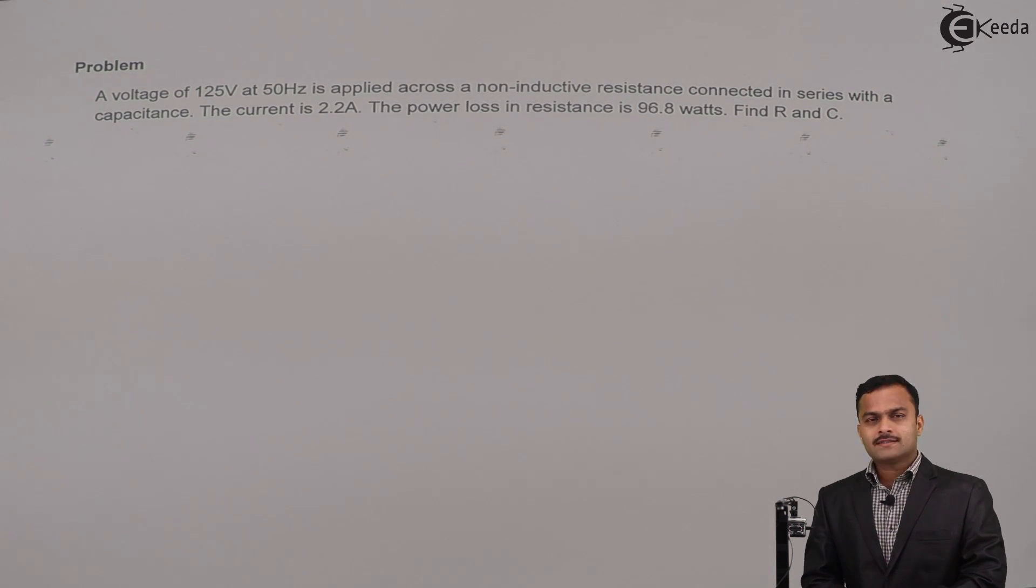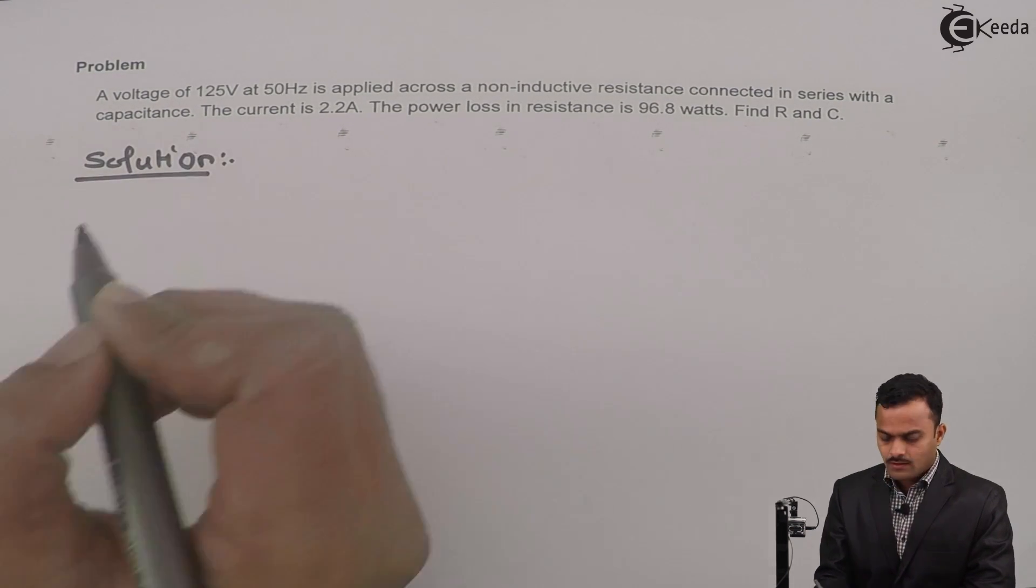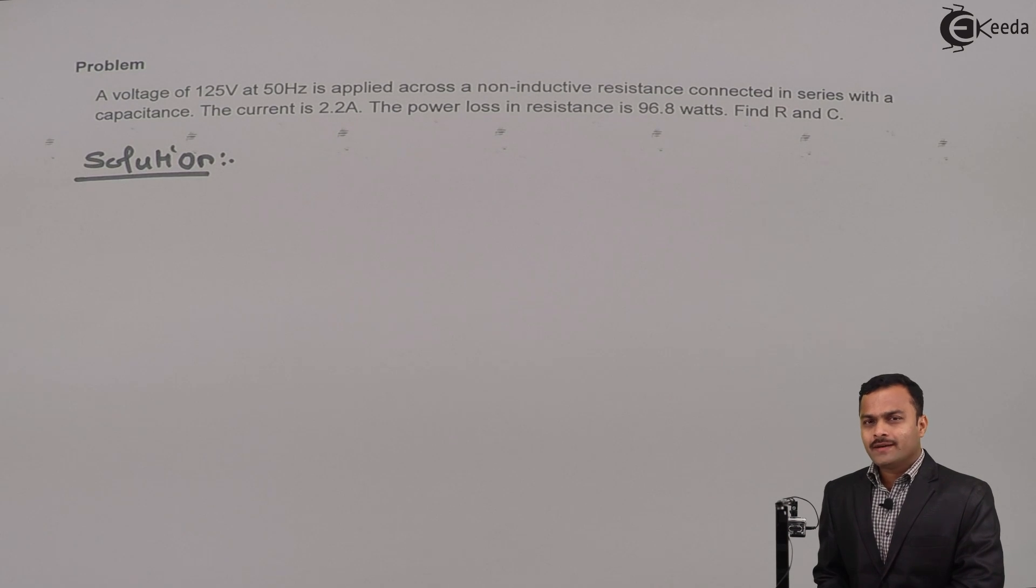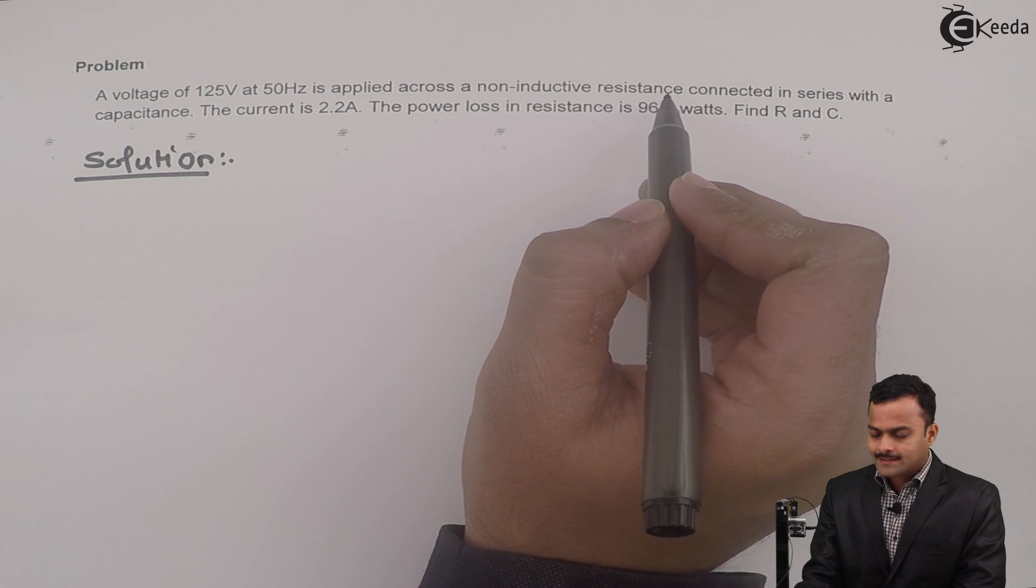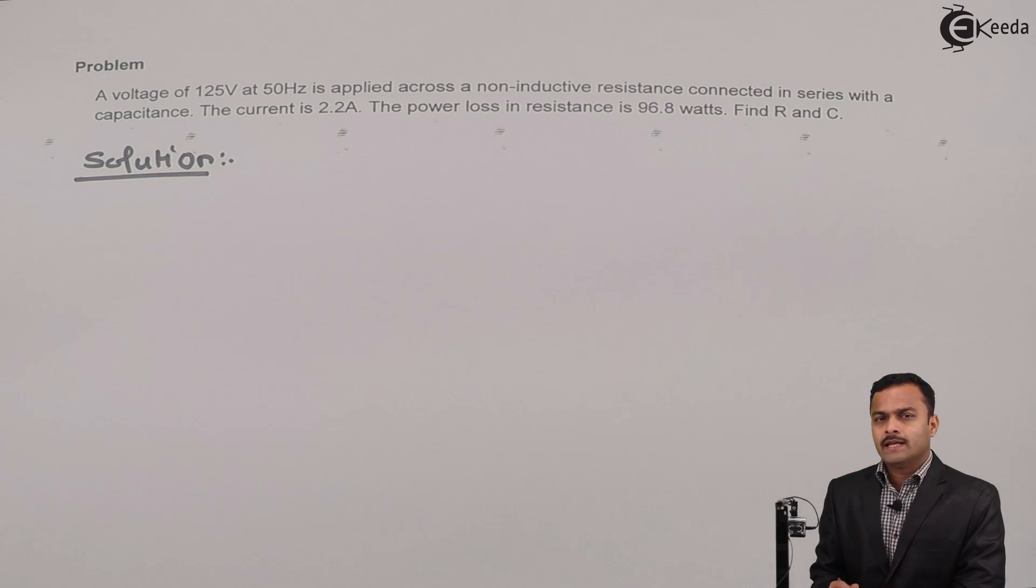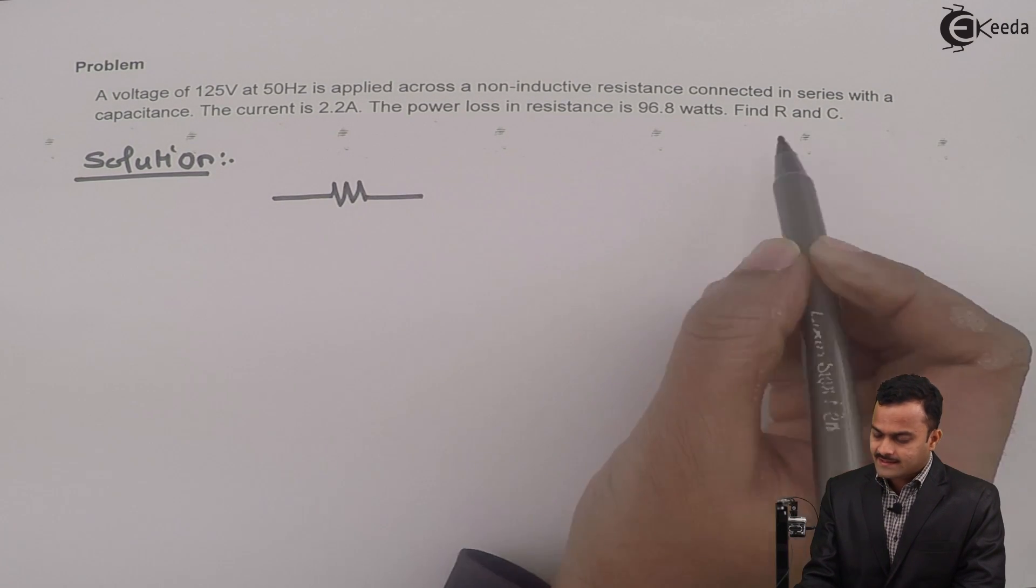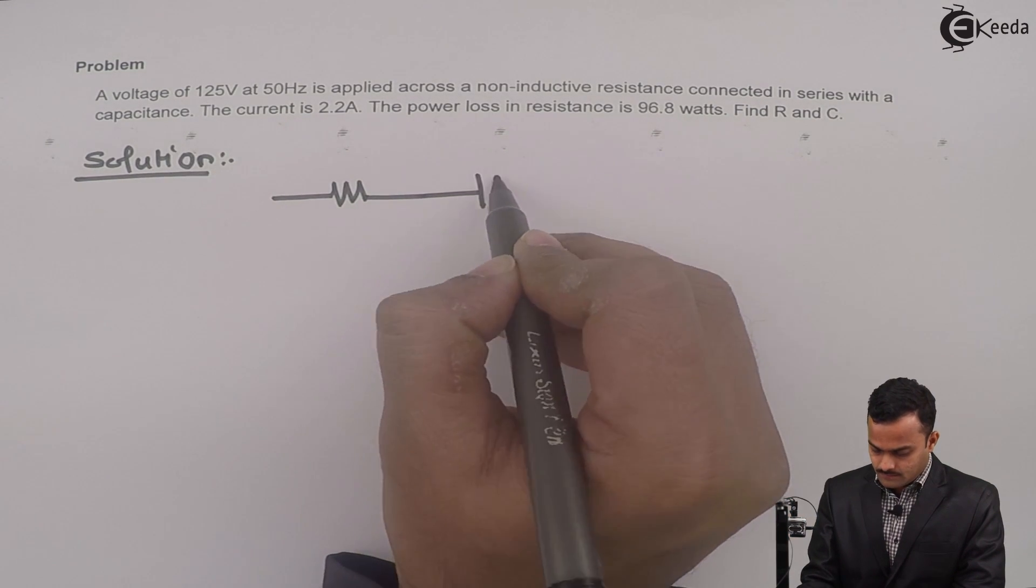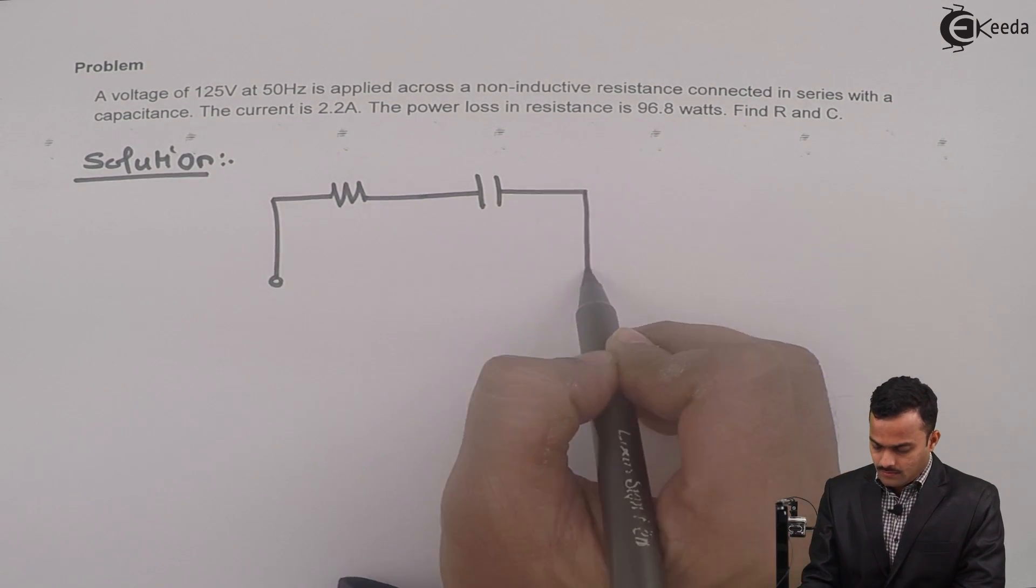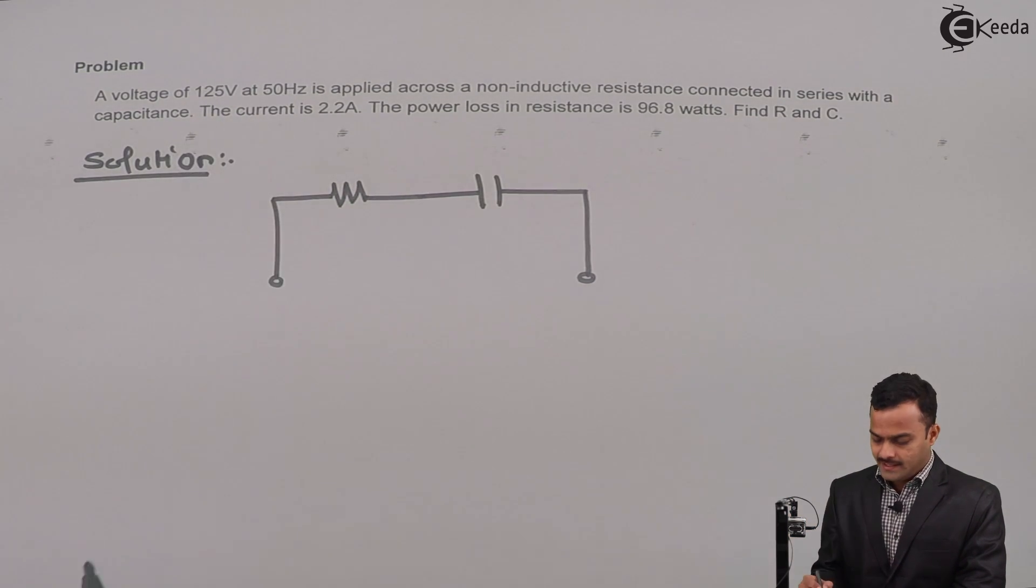So let's solve. Here they have given a series circuit having a non-inductive resistance. What is the meaning of non-inductive resistance? It's a pure resistance. So pure resistance is connected in series with a capacitance. To this combination, 125 volt at 50 Hertz is applied.